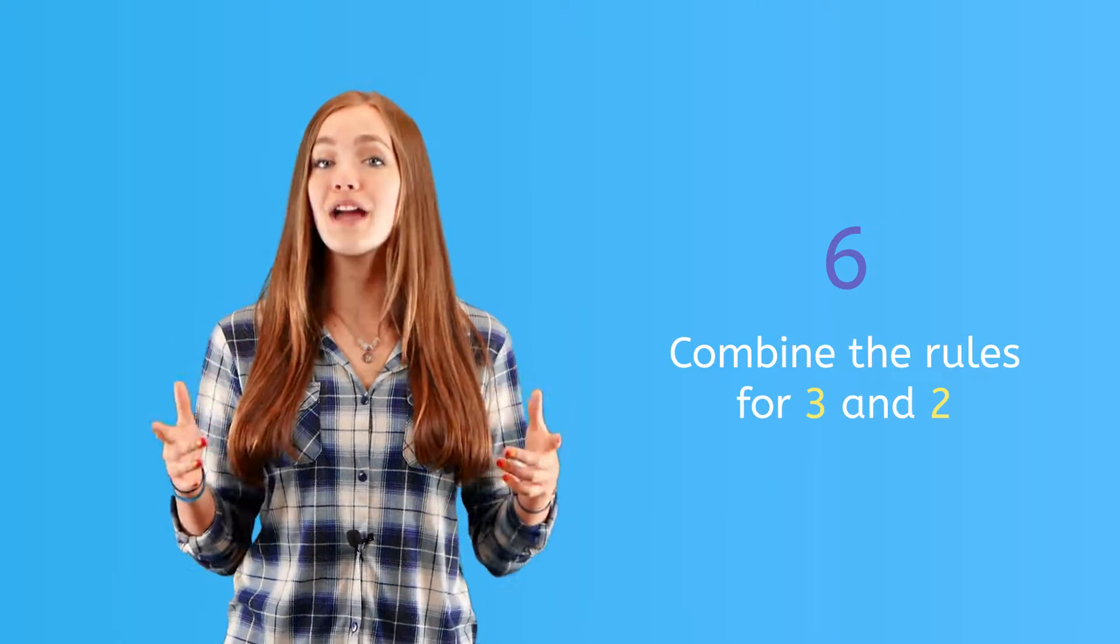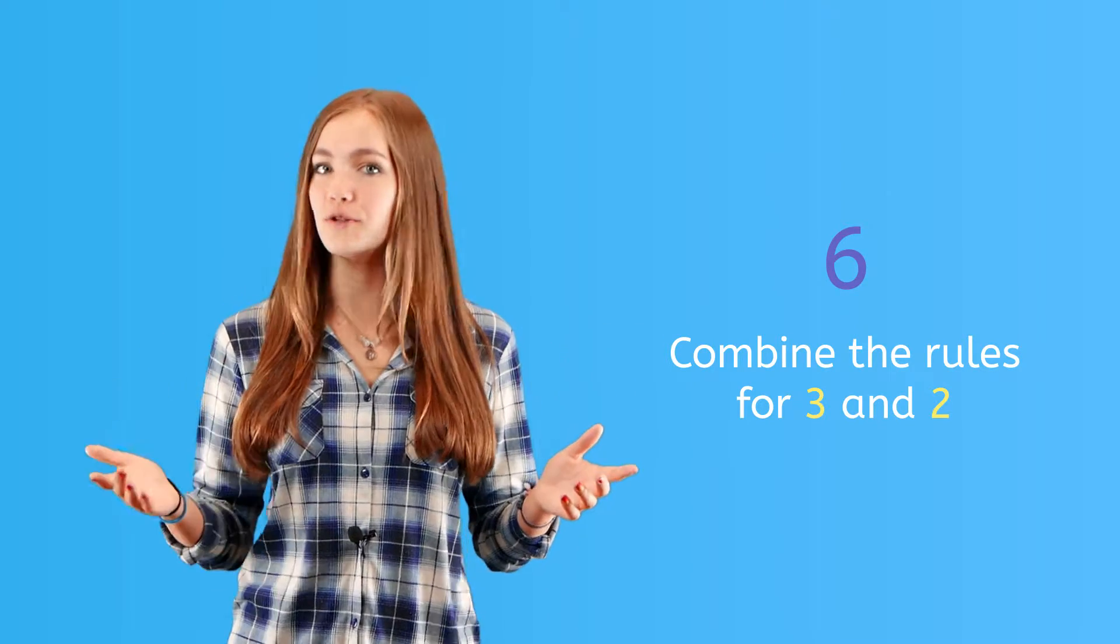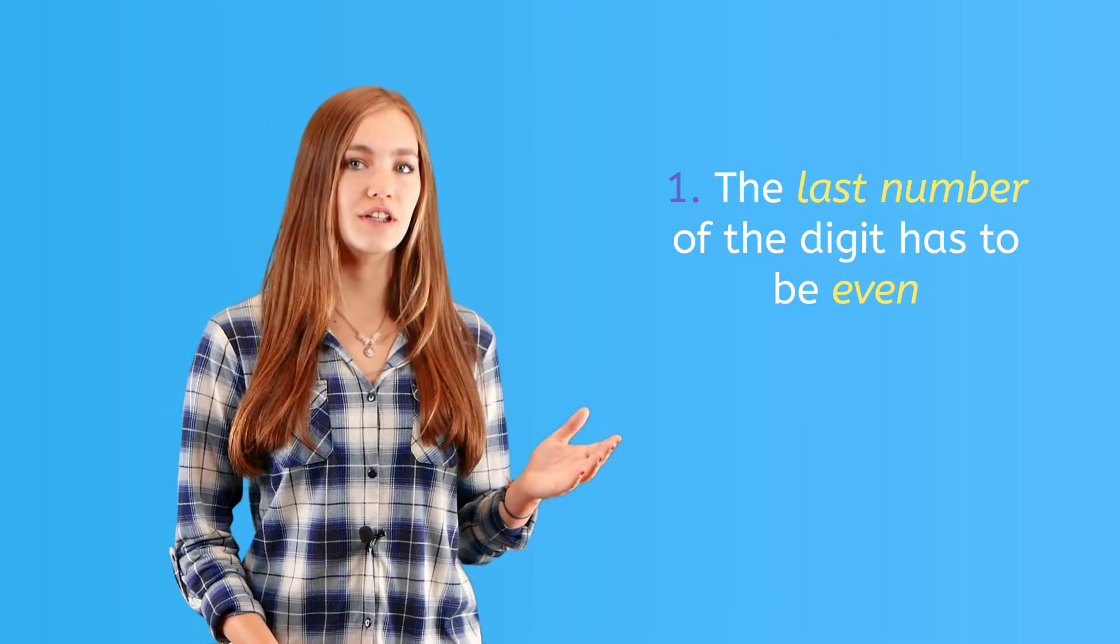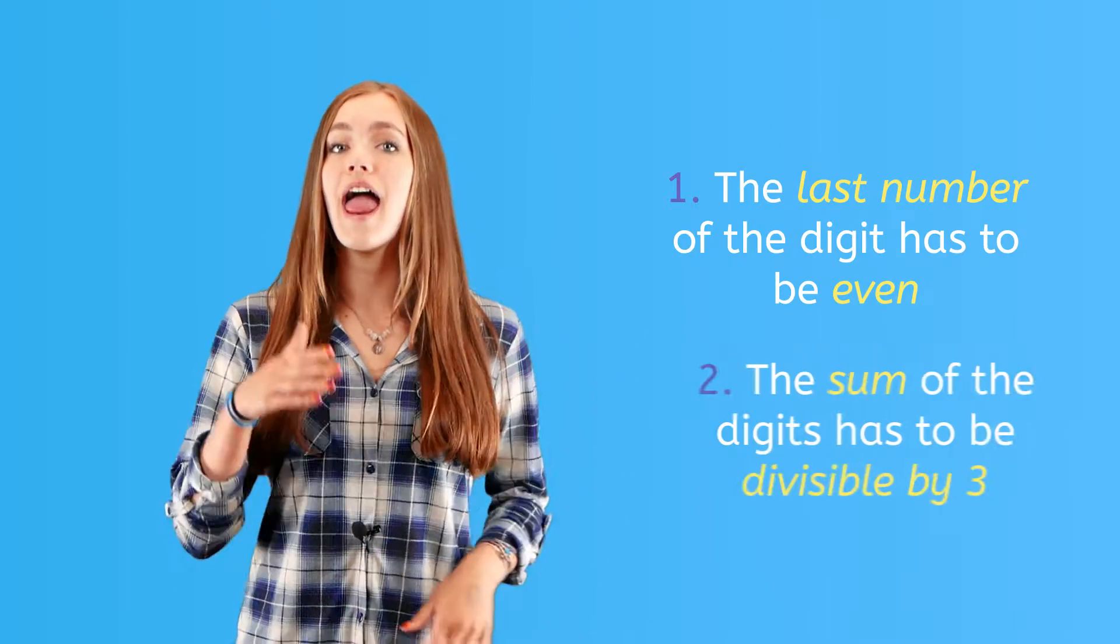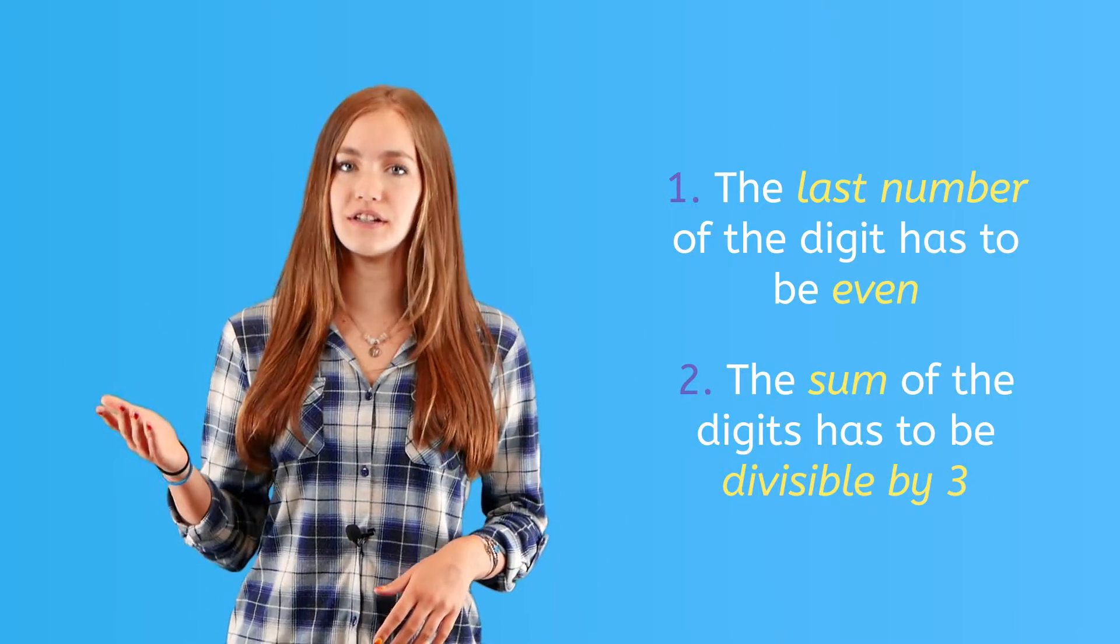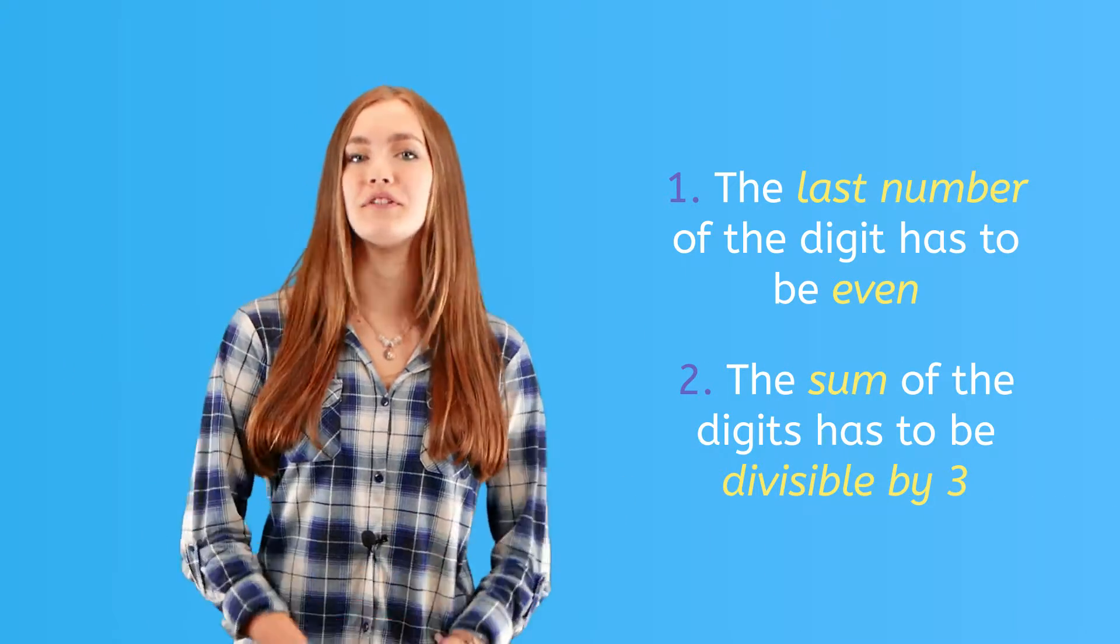The rule for the digit 6 is a little bit more complicated. Basically, you combine the rules for 3 and 2. This means that the last number of the digit has to be even, and the sum of the digits in the dividend have to be divisible by 3. Let's do some examples.